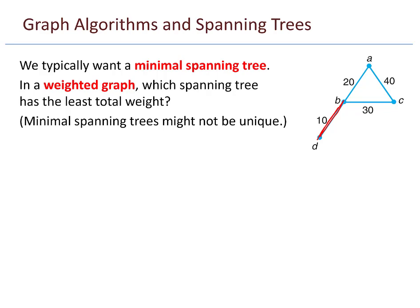In this particular graph, what is my minimal spanning tree? I have to include the 10, and then I could go across to the 30 and the 40 — that's a spanning tree with total cost 80, but that's not quite the minimal one. I could go up to the 20 and down, giving a cost of 70. But the minimal one has cost 60. That's the minimal spanning tree.